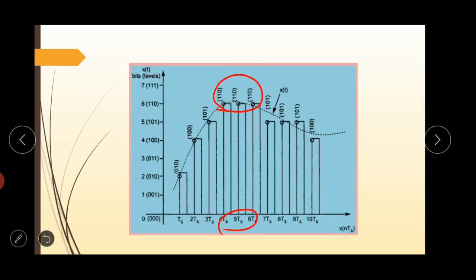The DPCM works on the principle of prediction. The value of the present sample is predicted from past sample. The prediction may not be exact, but it is very close to the actual sample value.